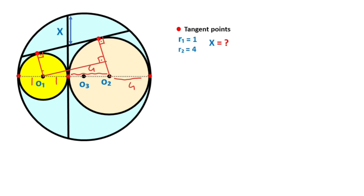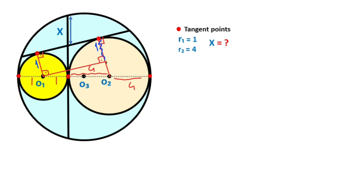We know that here is a radius so this side is equal to one. Notice that we get a rectangle. That means if this side is y units, the opposite side must also equal one unit. We know that the radius of the middle circle equals four units, so three units are left on this side.